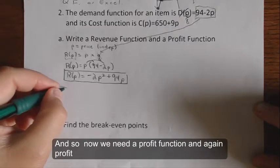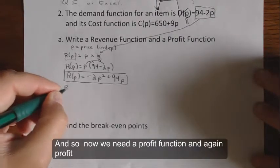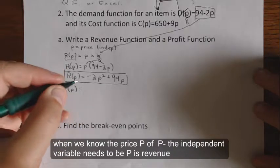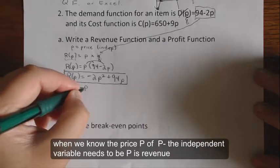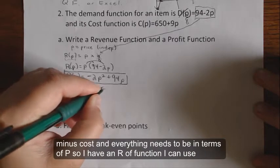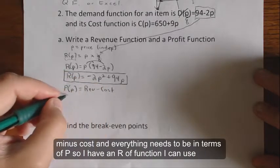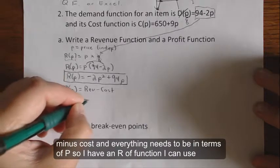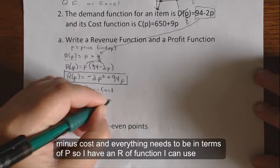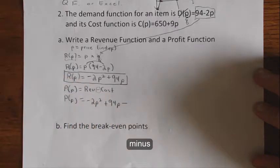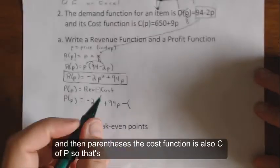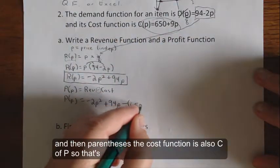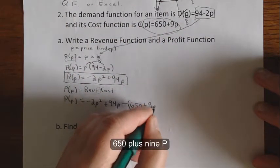Now we need a profit function. Profit, when we know the price, P(p), where the independent variable needs to be p, is revenue minus cost. Everything needs to be in terms of p, so I have an R(p) function I can use. Minus, and in parentheses, the cost function is also C(p), so that's 650 + 9p.